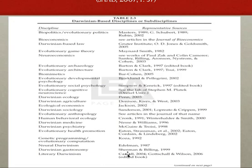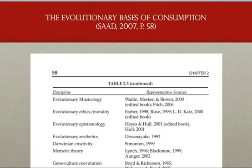Neuro-Darwinism applies the ideas of selection within an individual's own brain — this is Gerald Edelman's work. Darwinian gastronomy — I've talked about it in the past — basically asks why some cultures have evolved spicy foods versus others that haven't, and why some foods are more meat-based versus vegetable-based. Literary Darwinism is the application of evolutionary principles in engaging in an analysis of literature.